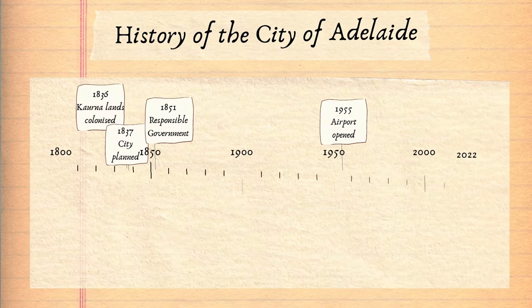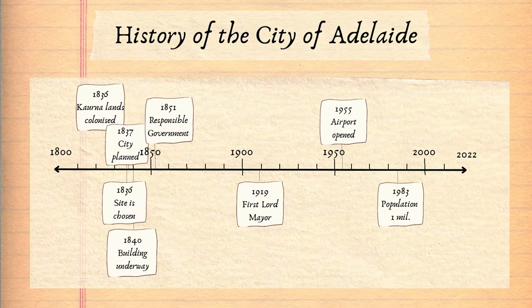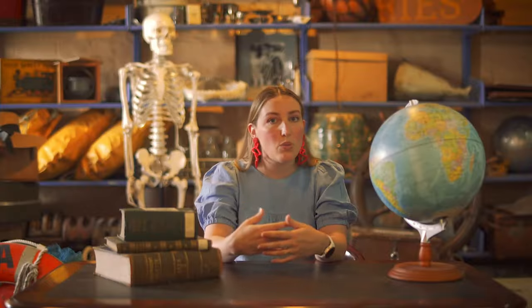So if you wanted to make a timeline about the history of the city of Adelaide, you could include the date where women got the right to vote and become members of Parliament. It wouldn't make sense, however, to include the date that women in New Zealand got the right to vote. It's really important that you stick to just the one place, one society, or one theme.